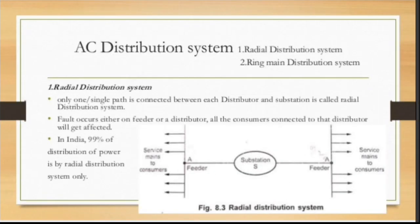Distribution systems are classified into three main categories: radial distribution system, ring main distribution system, and interconnected distribution system. In the radial distribution system, feeders are radiated outwards from the substation and power can flow in one direction only. If any fault occurs in a feeder, the total service area will be disturbed, and all consumers connected to the affected distributor will be affected.